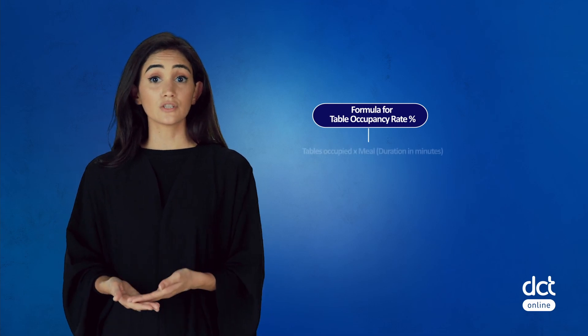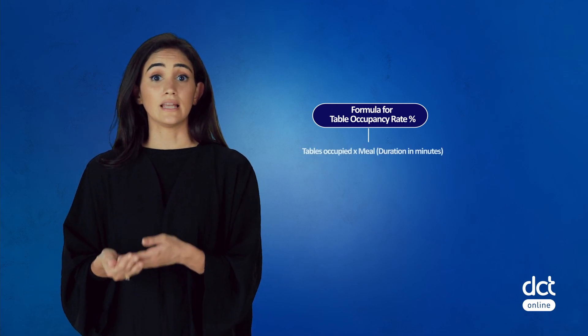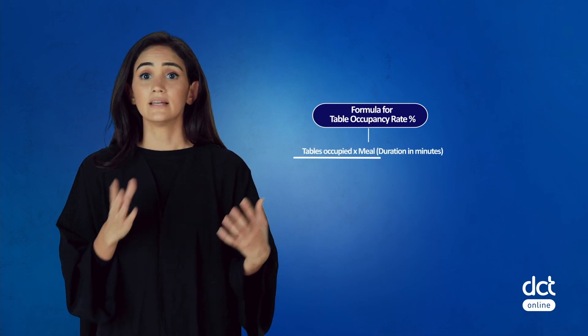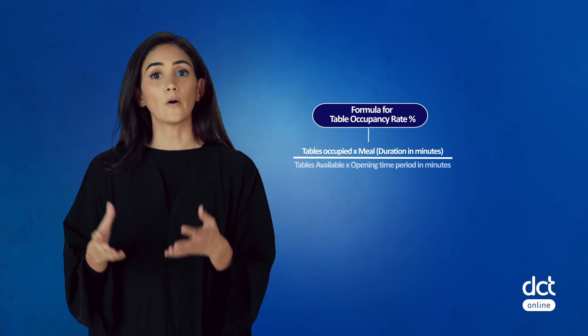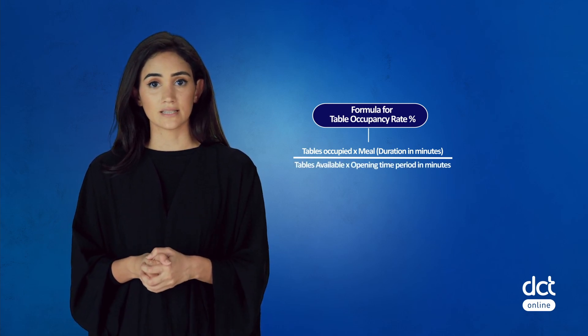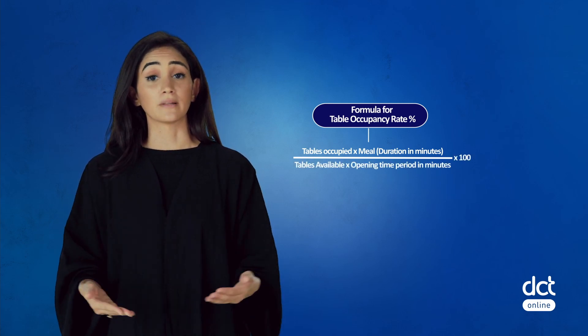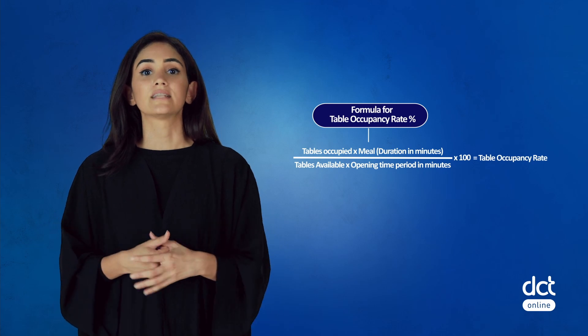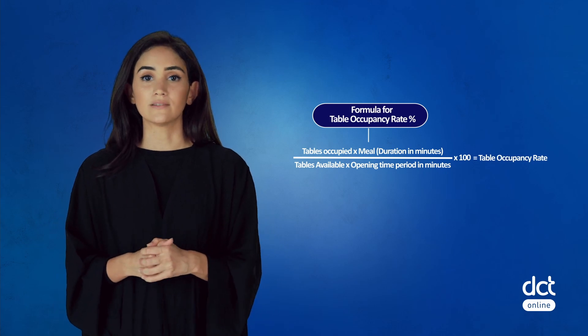This is the formula used for this calculation: tables occupied times meal duration in minutes, divided by tables available multiplied by opening time period in minutes, multiplied by 100, will give you the table occupancy rate.